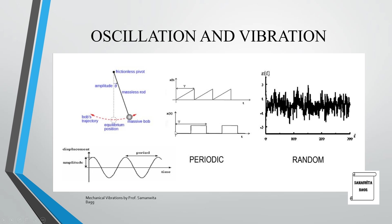In the graphs: periodic motion is shown as a ramp input going from zero to maximum and back, and a step input. In both cases, the amplitude of vibration remains constant with respect to time — that is periodic motion. Random motion shows amplitude varying — sometimes very high, sometimes low. Amplitude is the maximum distance covered by the body, and period is the time for one complete to-and-fro motion.